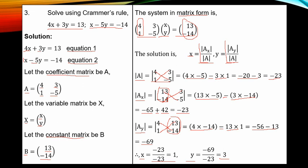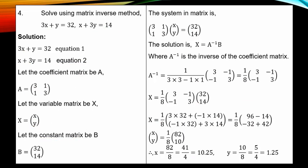This is a summary of Cramer's rule. The last classwork in this series: solve using the Matrix Inverse Method. The first equation is 3S plus Y equal to 32, equation 1. The second equation is S plus 3Y equal to 14, equation 2.